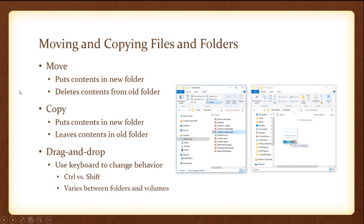Moving and copying: moving is like cutting — taking a file from one place and relocating it to another, putting the contents in a new folder and deleting it from the old folder. Copying puts content in a new folder while leaving it in the old folder — making a second version of that file. You can use drag and drop by clicking on a file, holding the clicker, and moving it to where you want. Depending on what you're doing, you're either copying or cutting.